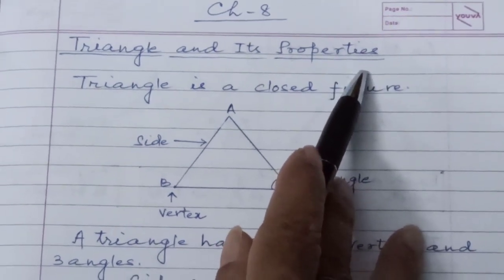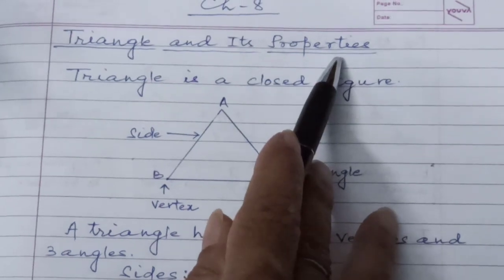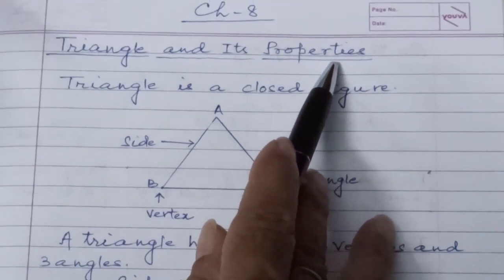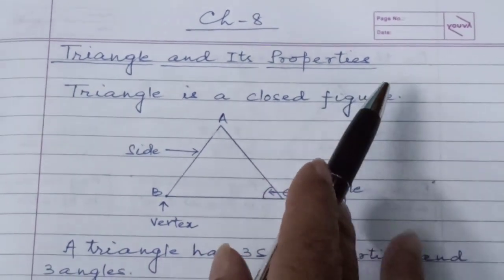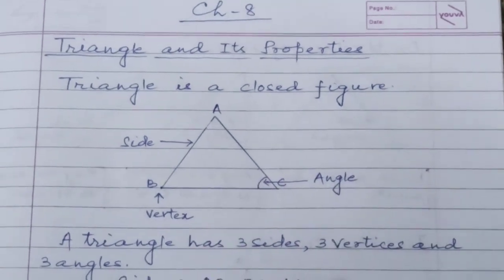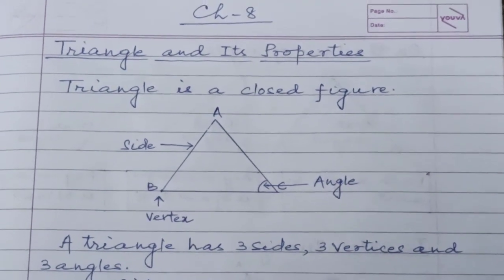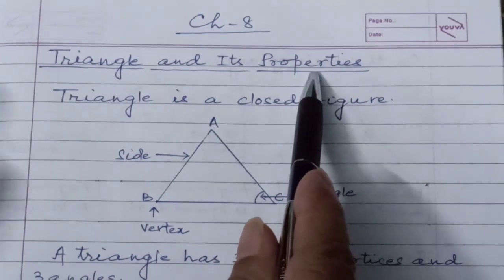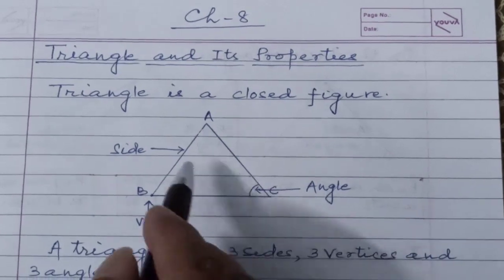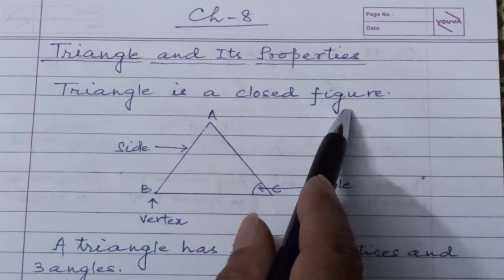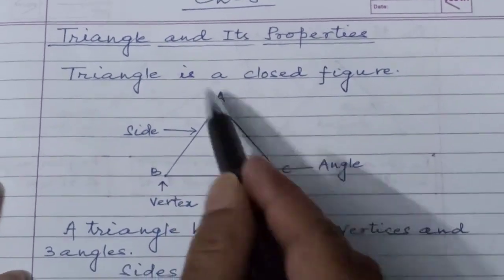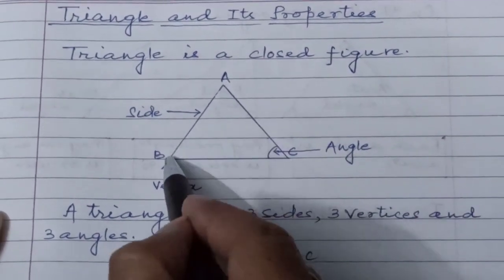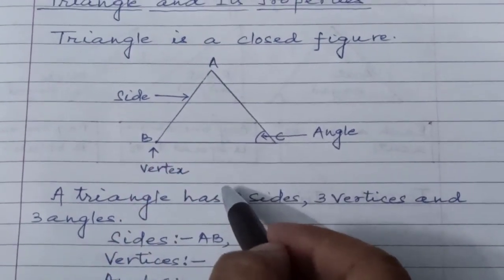First of all, we will understand what a triangle is, how many types of triangles there are, and then its properties. You have already learned this in Class 6, but to start this chapter we need to understand once again. A triangle is a closed figure which consists of 3 sides, 3 vertices, and 3 angles.